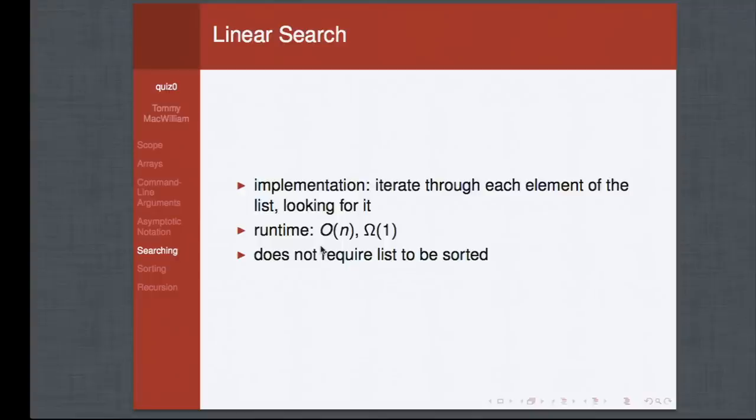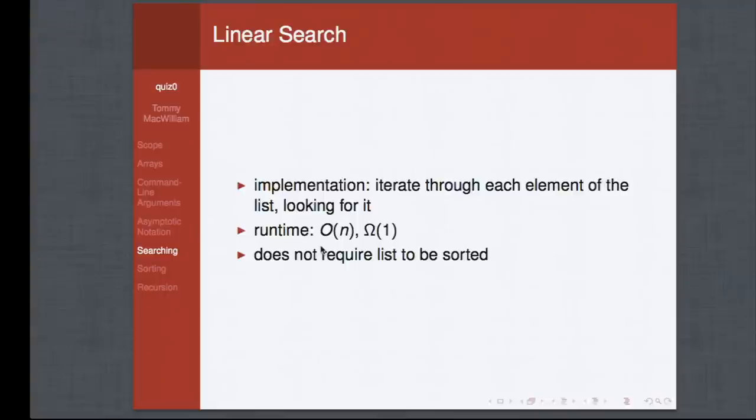Linear search: look at every element in the list until you find the target. Worst case is O(n) — if the element is last, we must check everything. Best case is O(1) — if the element is first. Linear search does not require a sorted list since we check every element regardless of order.